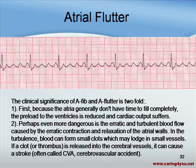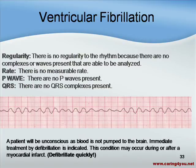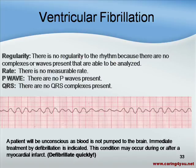Now let's look at ventricular fibrillation. There is no regularity to the rhythm because there are no complexes or waves present that can be analyzed. There is no measurable rate, no P waves present, and no QRS complex. The heart is beating too rapidly for anything to be seen. A patient will usually be unconscious as blood is not pumped to the brain. When you see ventricular fibrillation, you quickly defibrillate the person.